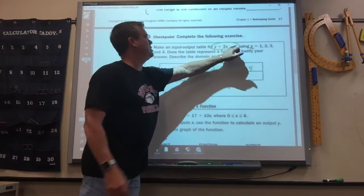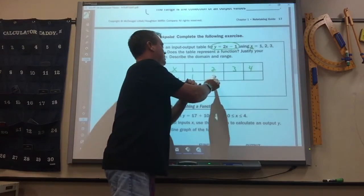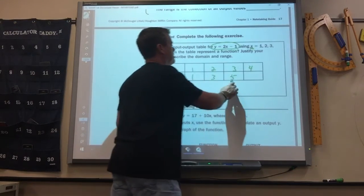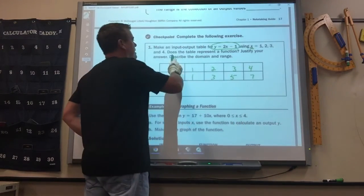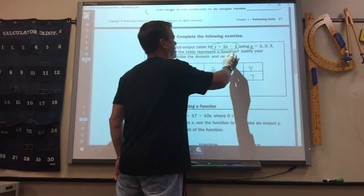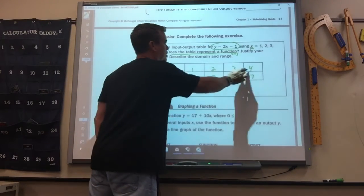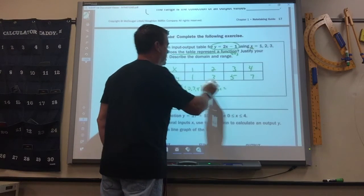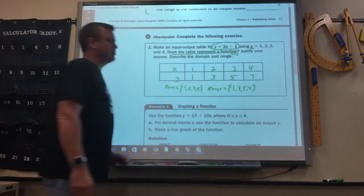So those are the numbers you put in. Two times one is two, take away one is one. Two times two is four, minus one is three. Two times three is six, minus one is five. You see the pattern? So what's the next one? Seven. Does this represent a function? Yes. All the x's are different. Describe the domain and range. The domain is one, two, three, and four. The range is one, three, five, and seven.